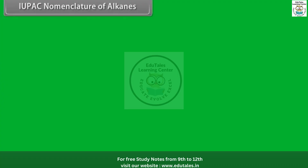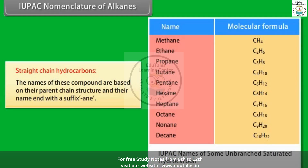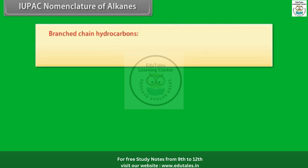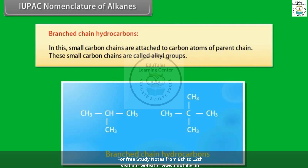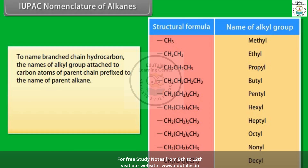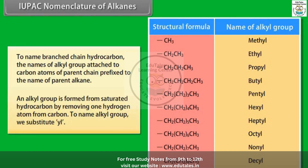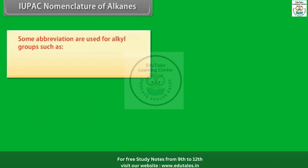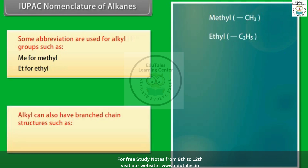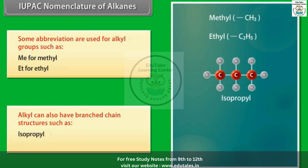IUPAC nomenclature of alkanes — straight-chain hydrocarbons: The names of these compounds are based on their parent chain structure, and their name ends with the suffix -ane. Branched-chain hydrocarbons: Small carbon chains attached to carbon atoms of the parent chain are called alkyl groups. An alkyl group is formed from a saturated hydrocarbon by removing one hydrogen atom. To name an alkyl group, we substitute -yl. Abbreviations such as Me for methyl and Et for ethyl are used. Alkyl groups can also have branched chain structures such as isopropyl and tert-butyl.